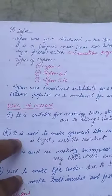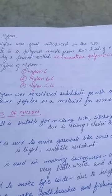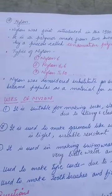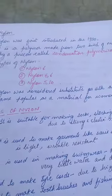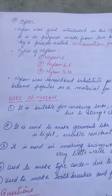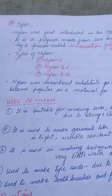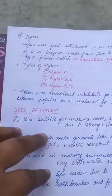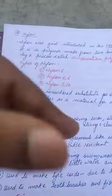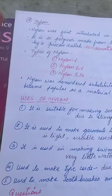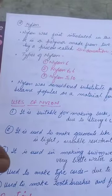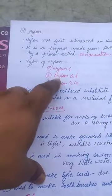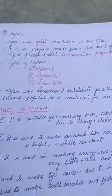The second synthetic fiber we will discuss is Nylon. Nylon is a substitute for silk. It was first introduced in the year 1930. Nylon is a polymer made from two kinds of monomers by a process called condensation polymerization. Types of nylon include Nylon 6,6 and Nylon 5,10 — these are the types of nylons available in the market.